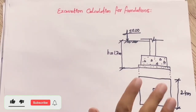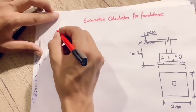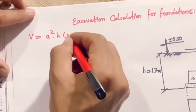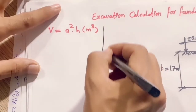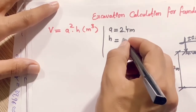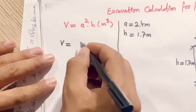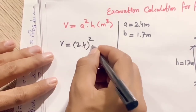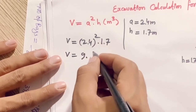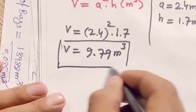To calculate the excavation for this foundation, the volume formula is: V = A² × H, with the unit of measurement in cubic meters. We have A = 2.4 meters and H = 1.7 meters. Substituting into the formula: V = 2.4² × 1.7 = 9.79 cubic meters. This is the excavation calculation per isolated footing.